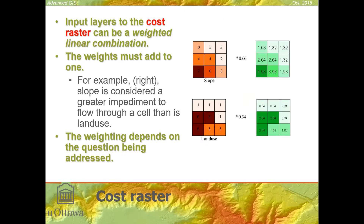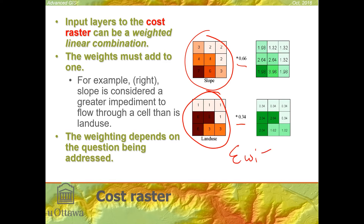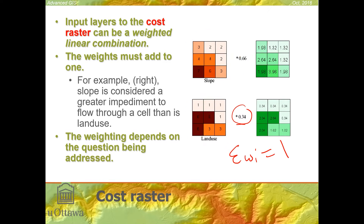The input layers that create the cost raster can also be weighted. We might have slope and land use, and we could weight each layer differently as long as the sum of the weights equals one, where W sub i is a weight — the same as a weighted linear combination in multi-criterion evaluation. In this particular case, slope is considered more of an impedance than land use to the objective at hand in terms of flow through each cell.